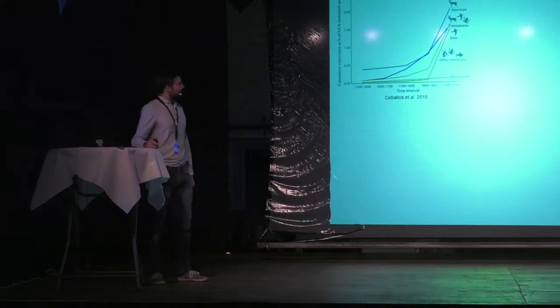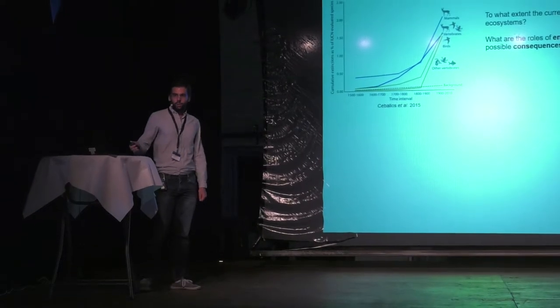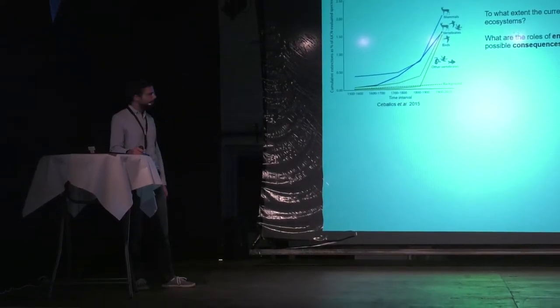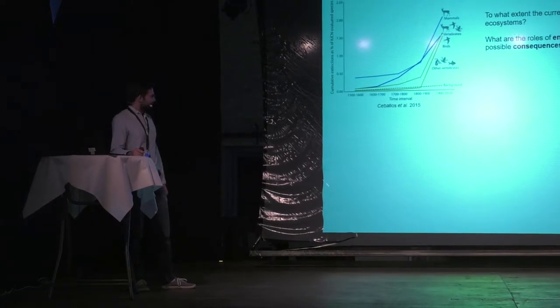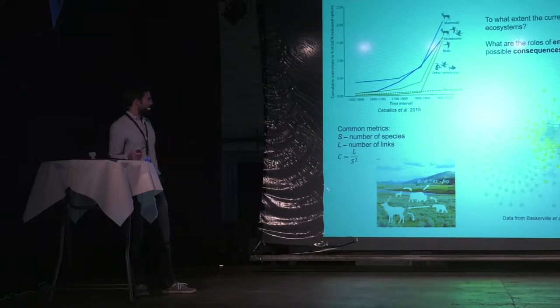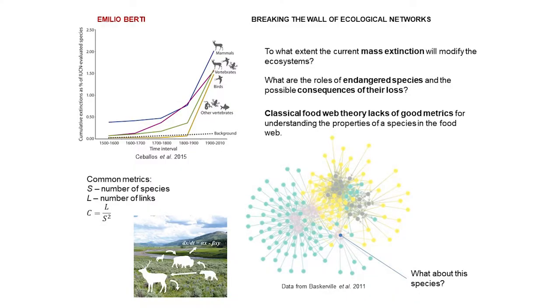But we still don't understand the consequences of this widespread loss of species. We can describe and depict ecological networks, ecosystems like networks of species interacting with each other via predatory links. The study of food webs, which is this network of species, is based on these metrics.